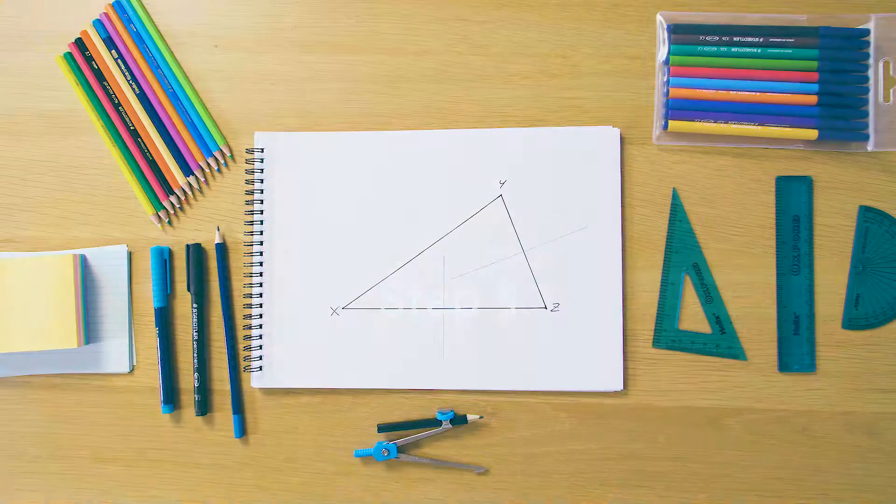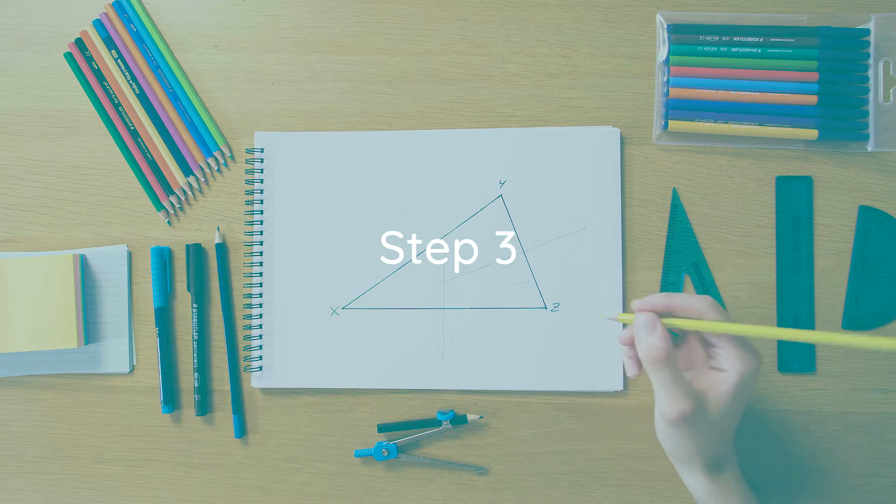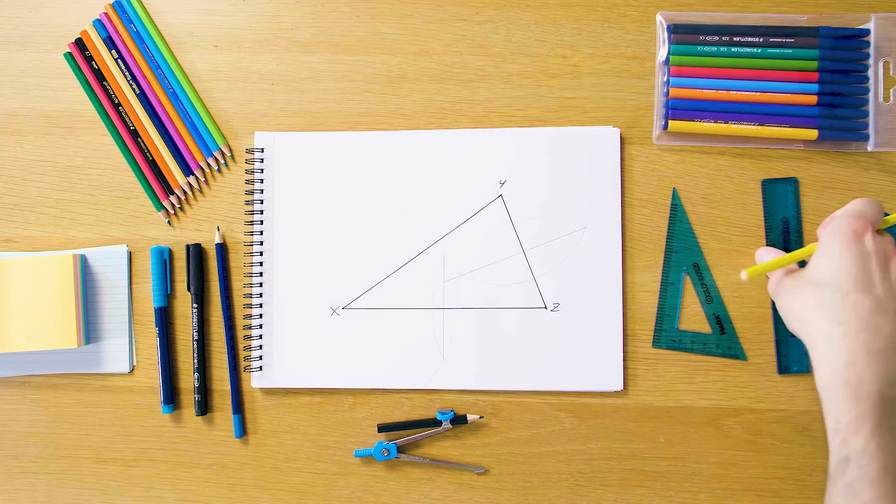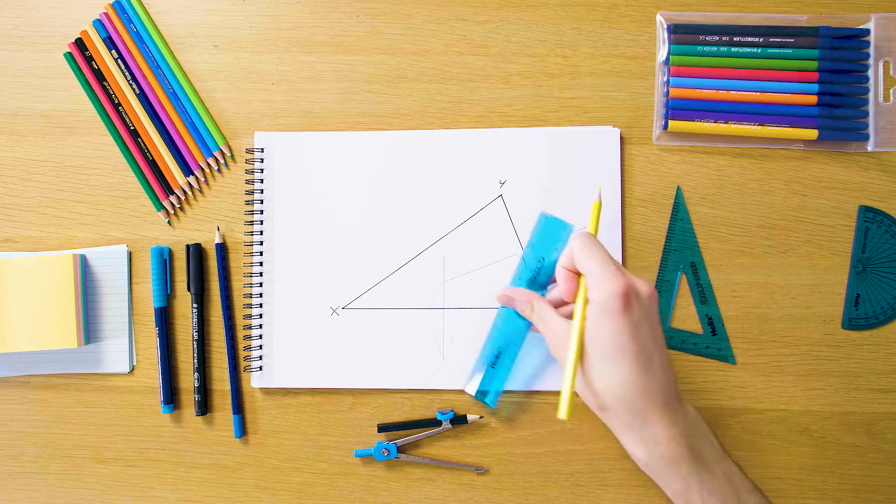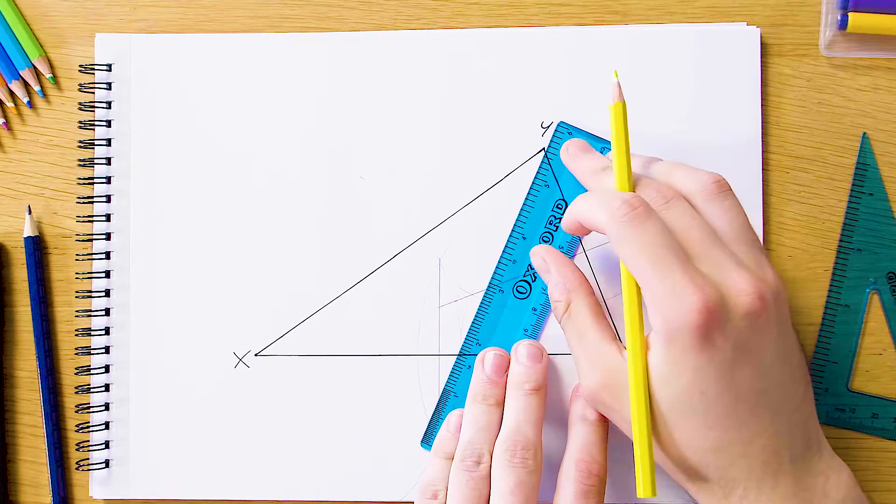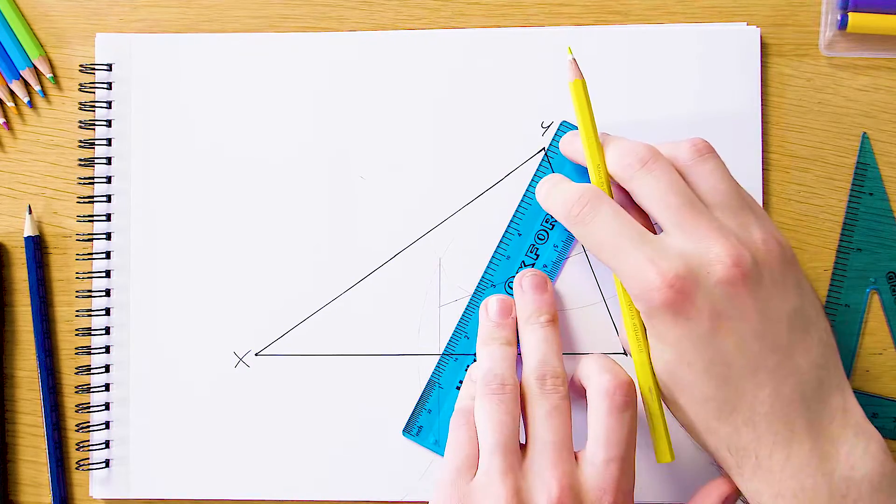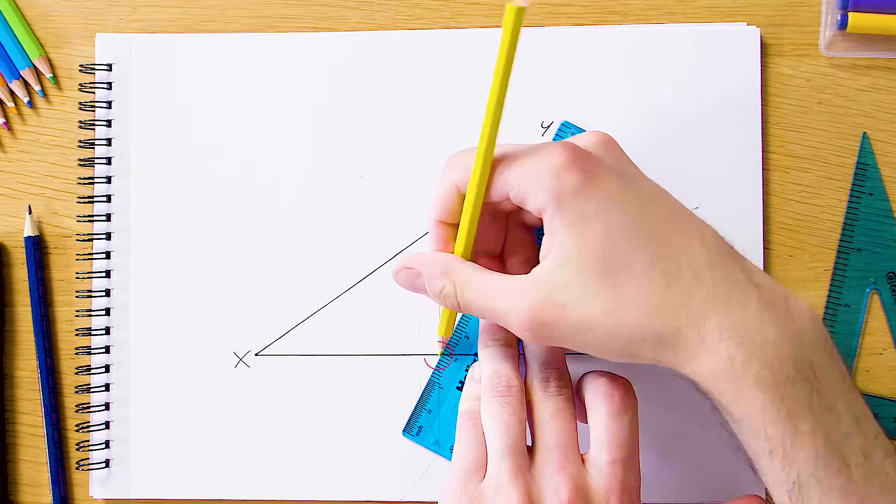This is where the method diverges from finding the circumcentre. With these two points, what we're actually going to do is join the middle point of the line to the far vertex. Normally with the circumcentre you would be looking for the crossing point of the bisectors themselves, but in this case we're looking for the crossing point when we join the middle point of each line to the far vertex opposite it.